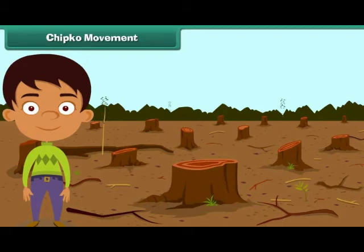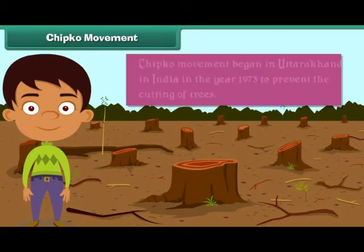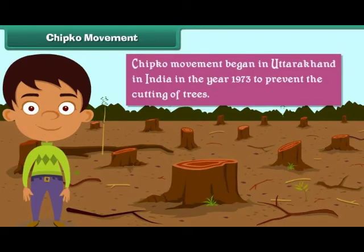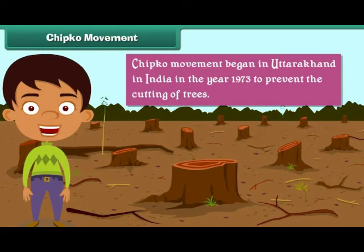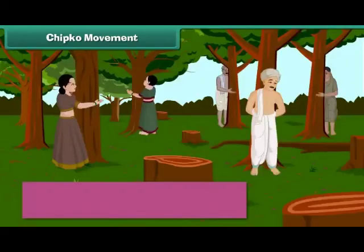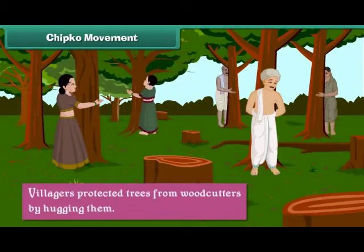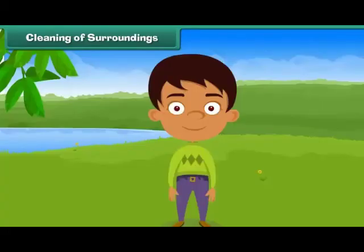Chipko Movement. The Chipko Movement began in Uttarakhand in India in the year 1973 to prevent the cutting of trees. It was called the Chipko Movement because during the movement, villagers protected trees from woodcutters by hugging them.